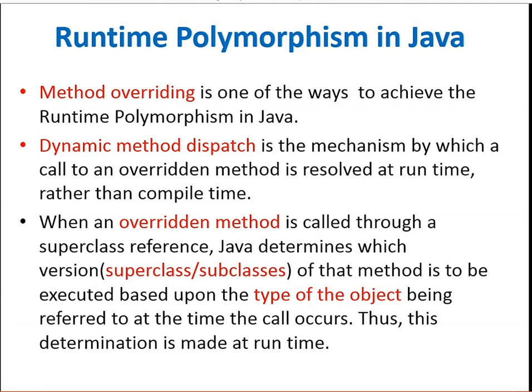As we know, there are two types of polymorphism: compile time polymorphism and runtime polymorphism. When an overridden method is called through a superclass reference or parent class, Java determines which version — the parent class method version or the child class method version — is to be executed based upon the type of the object being referred to at the time the call occurs. This determination is made at runtime, that's why it is called runtime polymorphism.